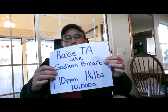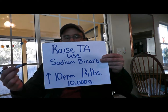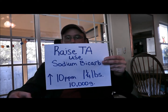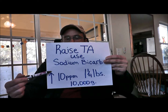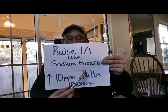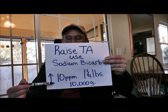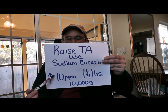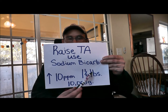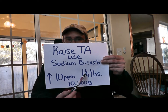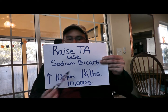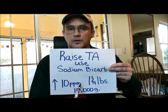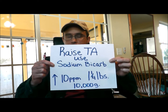Here's the chart you need: to raise your total alkalinity, you want to use sodium bicarb. To raise it 10 parts per million per 10,000 gallons, you use one and a quarter pounds. To raise it 20 parts per million per 10,000 gallons, you use two and a half pounds — you double the adjustment. If you have a 20,000 gallon pool and want to raise it 10 parts per million, you've doubled the gallons so you double the adjustment to two and a half pounds. This is your baseline — this is what you need to know.